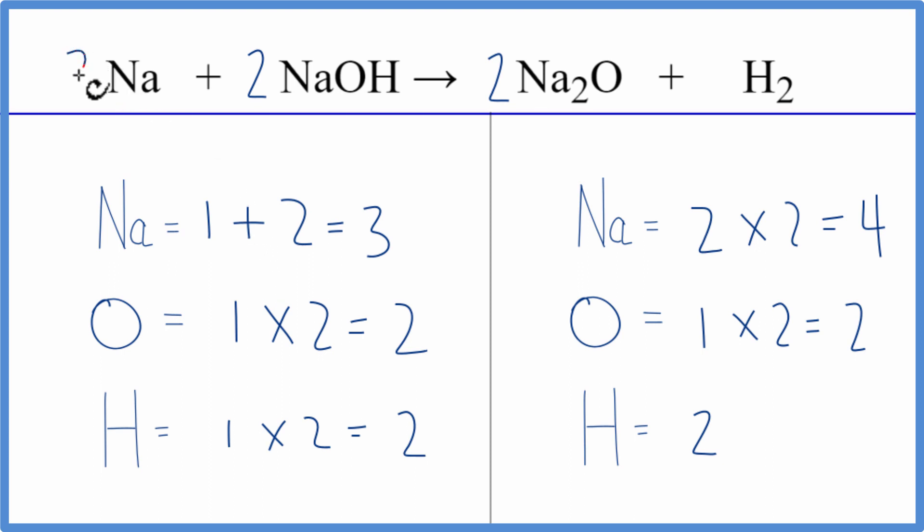Let's see how that changes things. So now I have one times 2, I have two sodiums, plus one times 2, two sodiums. So I have four sodium atoms and now the sodiums are balanced.